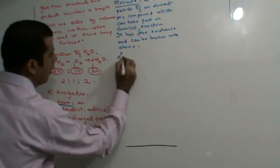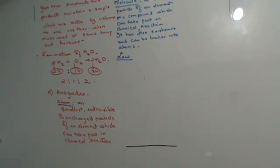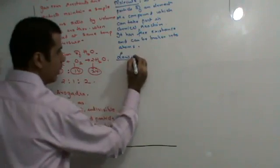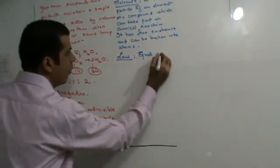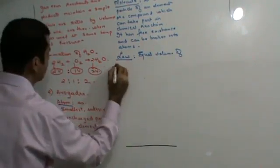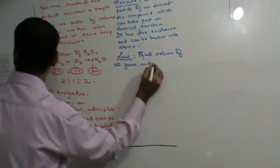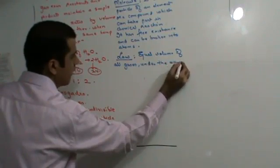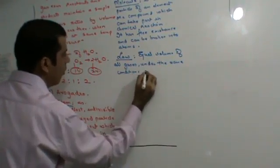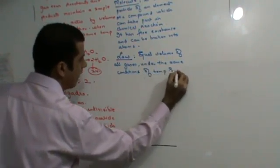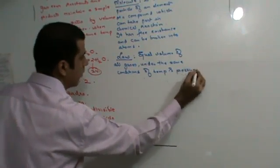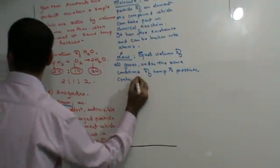On the basis of this theory of atom and molecule, Avogadro came up with Avogadro's law. He said that equal volumes of gases under the same conditions of temperature and pressure contain the same number of molecules.